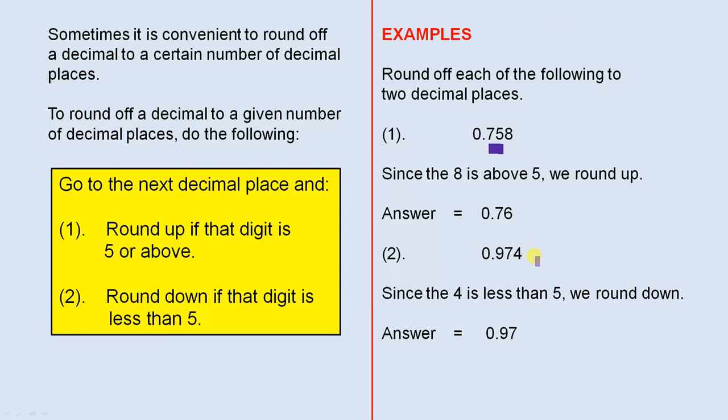Number 2: 0.974. We are rounding off to two decimal places, to there. We go to the next decimal place, and this here is less than 5. So we keep those two digits the same.